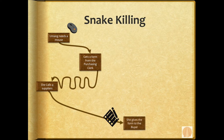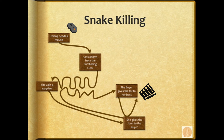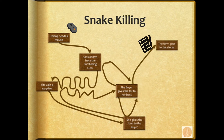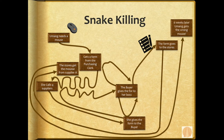The buyer wants to make sure she actually called the four suppliers, so he calls them himself. Once he signs the form he sends it through to Umang's boss, who checks with the buyer and then asks Umang if she really needs the item. Finally convinced, the boss signs the form, it goes to stores, and six weeks later Umang gets the wrong mouse. This description sounds like a parody but tragically it's very accurate for many things that happen in organizations.